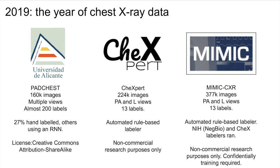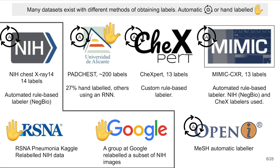2019 was the year of the chest x-ray dataset. Three datasets, all larger than the NIH, were released from three regions across the globe, all with multiple views and more or different labels to predict. Most of these datasets use an automatic labeler to assign labels to each image given a text-based radiology report, and the others are manually labeled by hand. Most use NLP rule-based models, which will output a positive, negative, or unknown label. The format of the labels between the datasets will vary, so be cautious. The RSNA and Google datasets have relabeled samples from the NIH dataset, but only for a few of the tasks. These can be very useful as an external test set for evaluation.